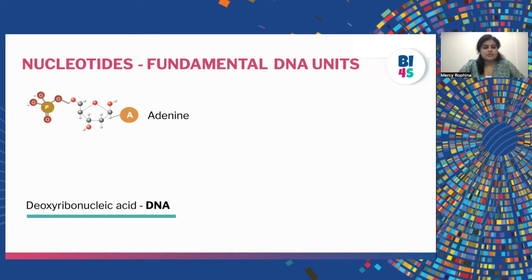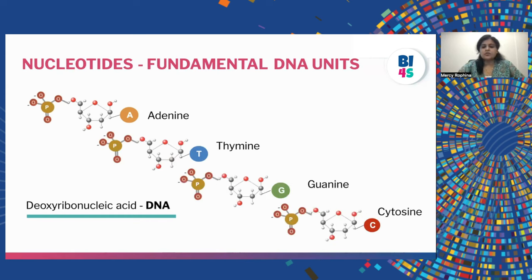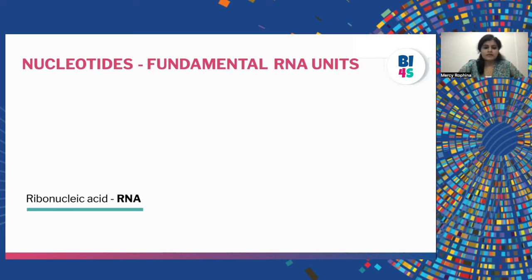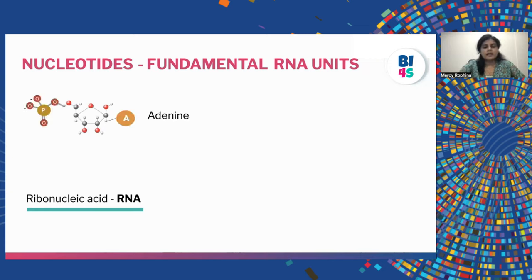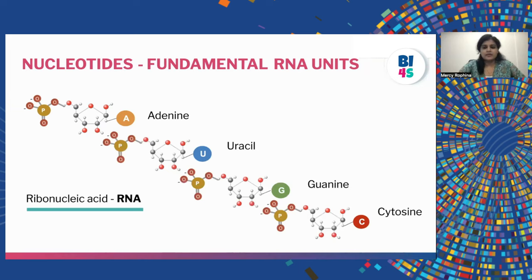A combination of nitrogenous bases attached to a sugar molecule, which is further attached to a phosphate molecule, together forms either a DNA or an RNA. When we look at DNA, which is deoxyribonucleic acid, we have a deoxyribose sugar molecule attached to a phosphate group and a nitrogenous base — adenine, thymine, guanine, or cytosine. RNA, or ribonucleic acid, is very similar to DNA with few differences: RNA uses a ribose sugar molecule instead of deoxyribose, and instead of thymine, RNA has uracil.